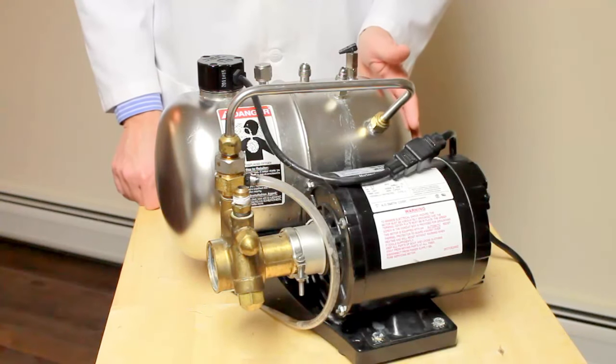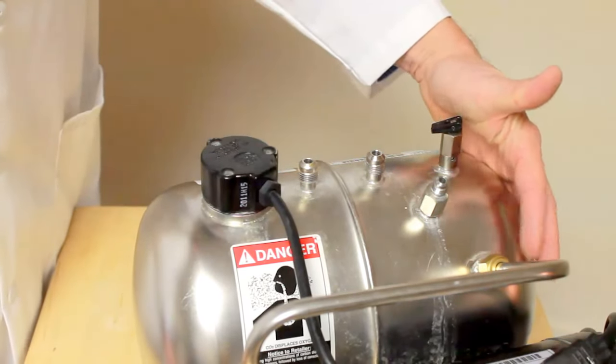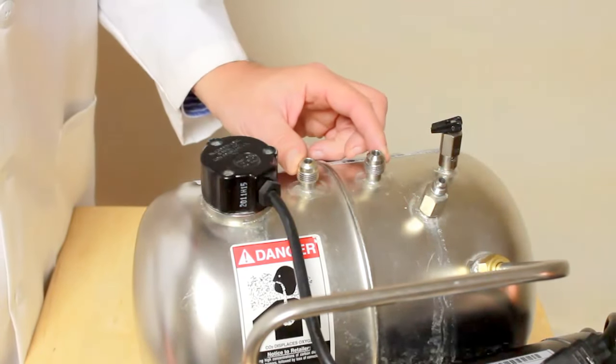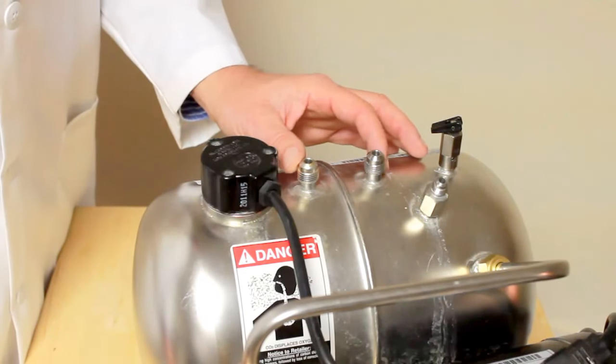This bright tank is two gallons which is more than ample. What it has on it is the water line in, the gas line in, and two outputs for the seltzer to go to either your bar gun or your towers.